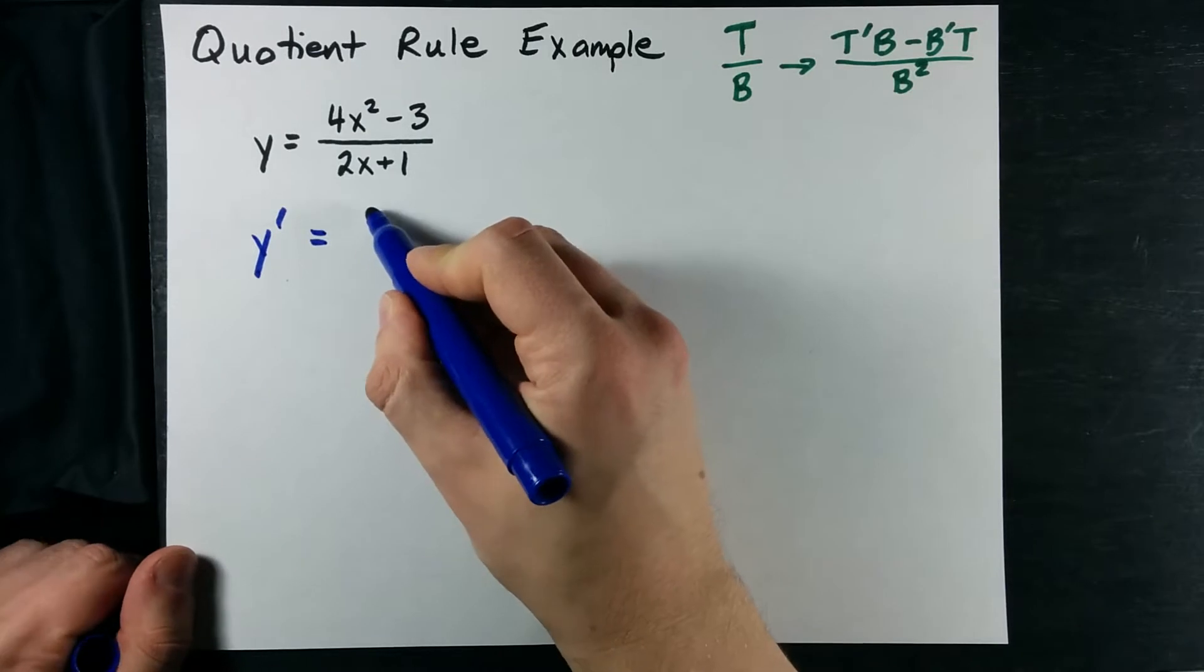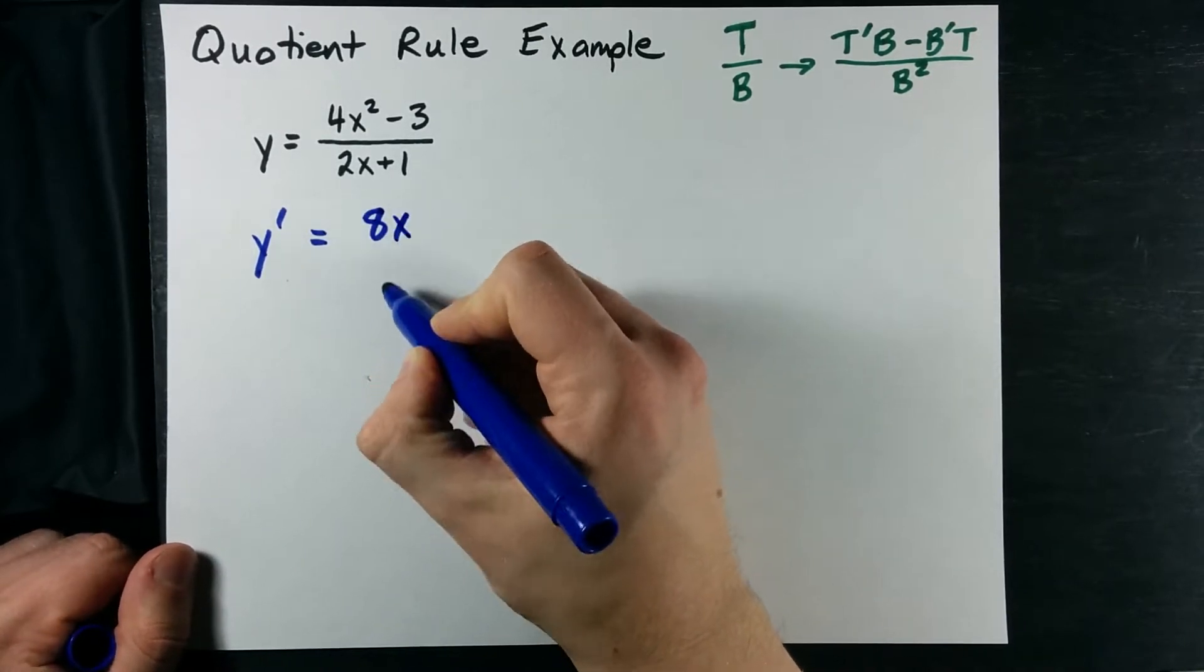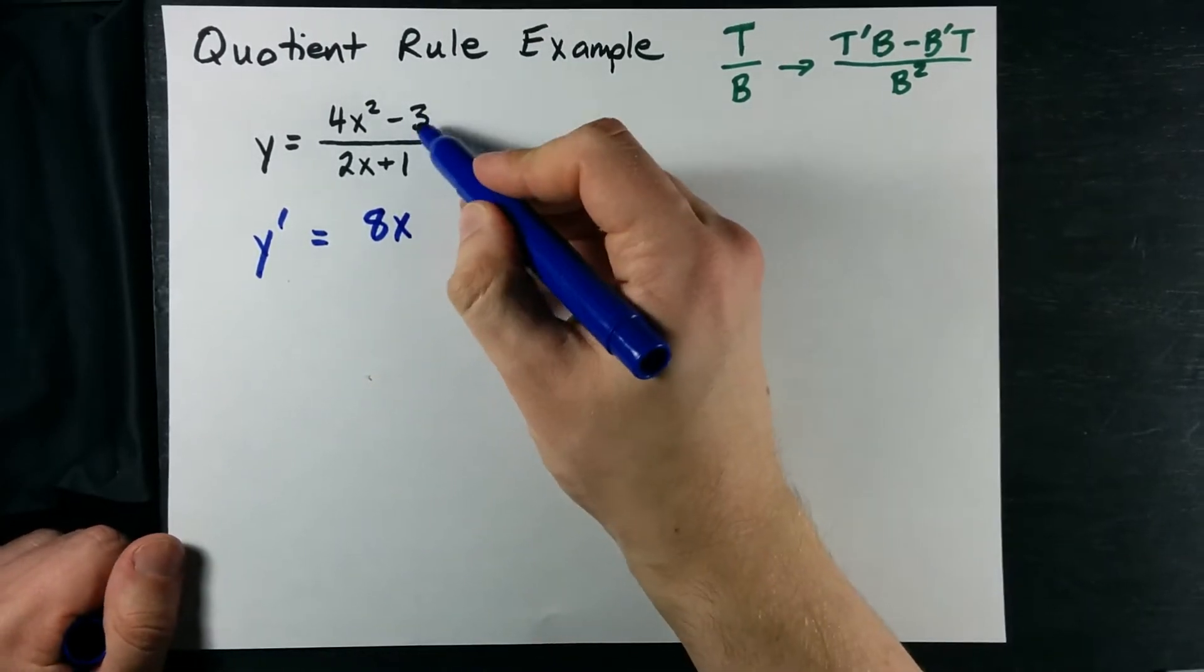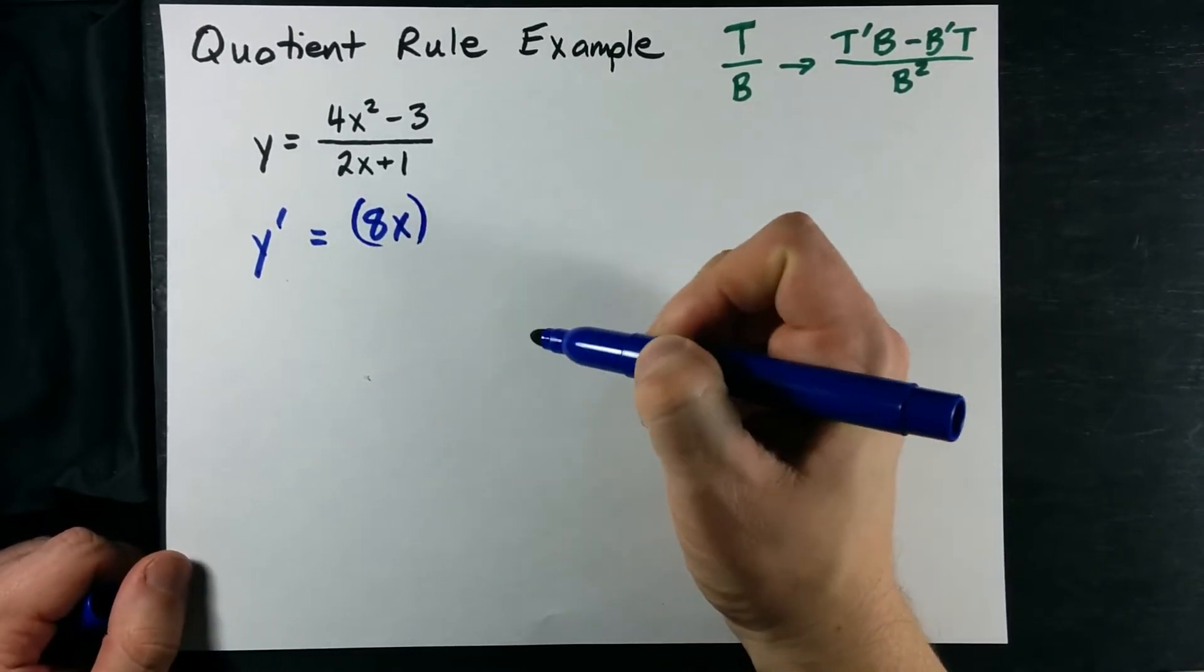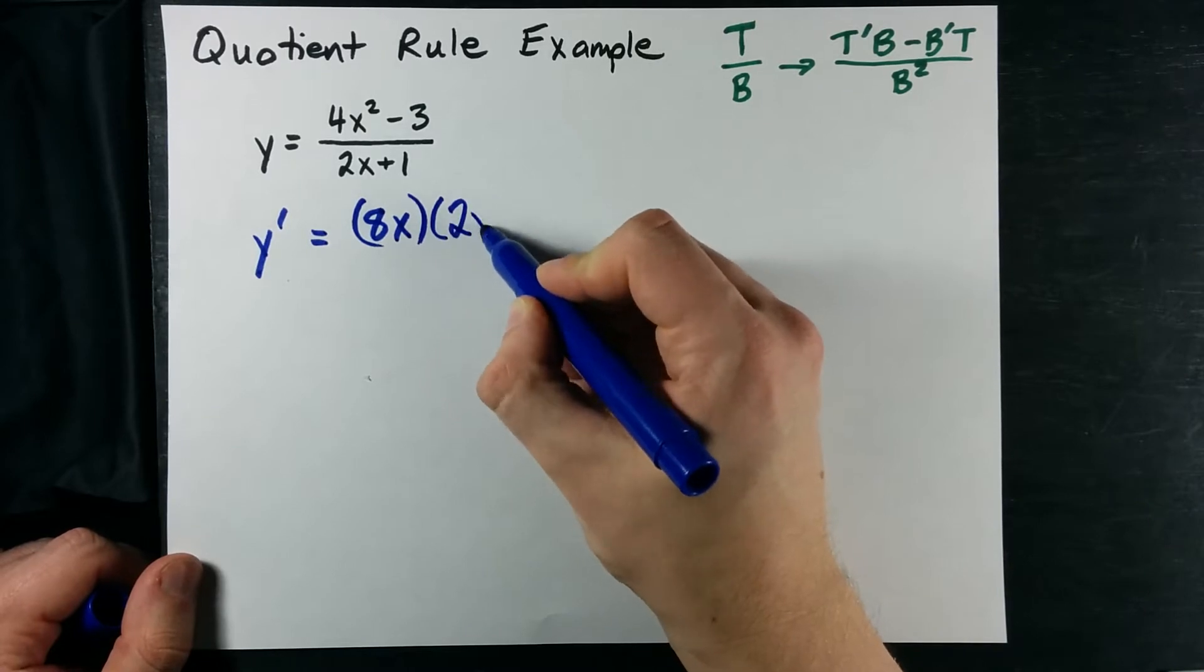Bring the 2 down. It becomes 8. X to the 1, and this becomes 0 because the derivative of a whole number is 0. So that's the derivative of the top, times the bottom,